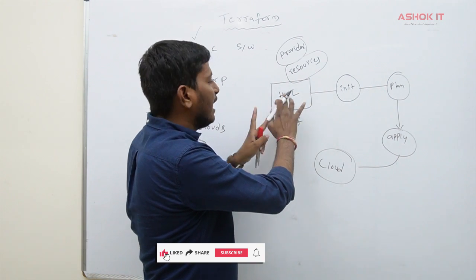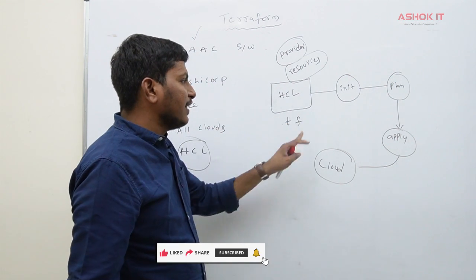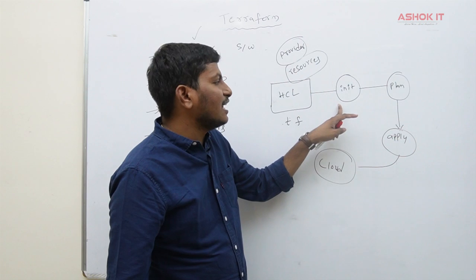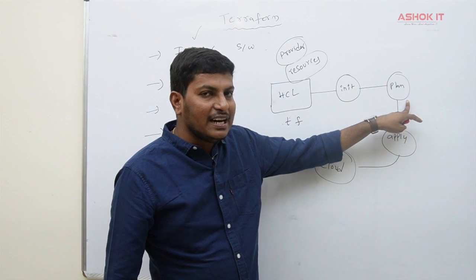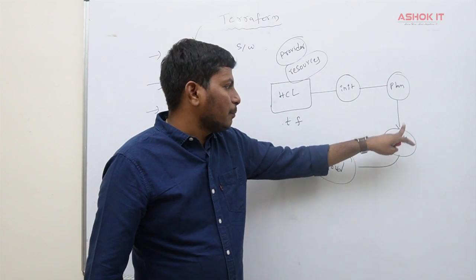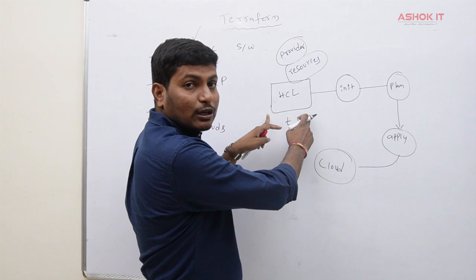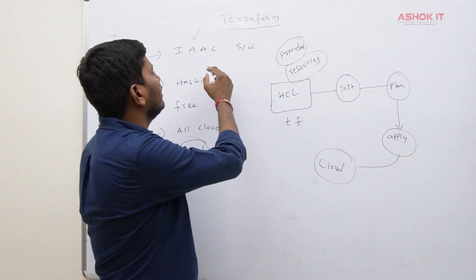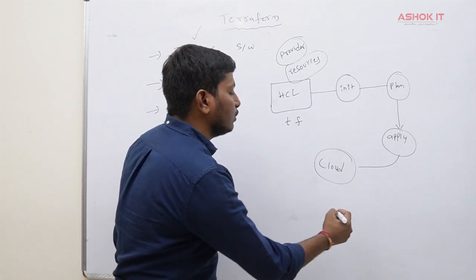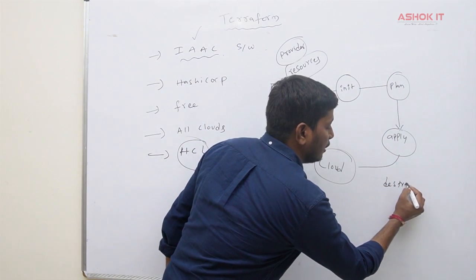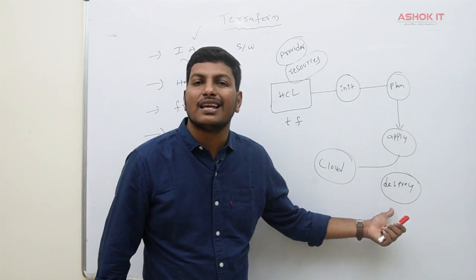Once the script is ready and saved with .tf extension, we execute 'terraform init', then 'terraform plan', then 'terraform apply' to create the infrastructure. Since we write code to create the infrastructure, this is called Infrastructure as Code software. If you want to destroy the infrastructure, execute 'terraform destroy' — it destroys everything created by Terraform with a single command.